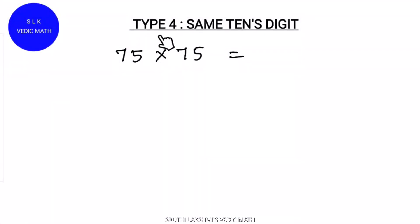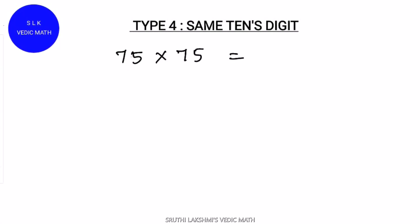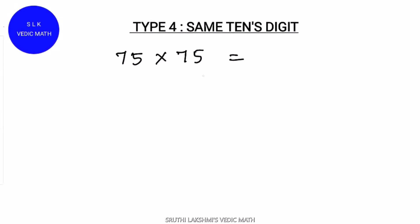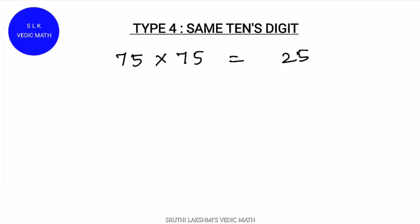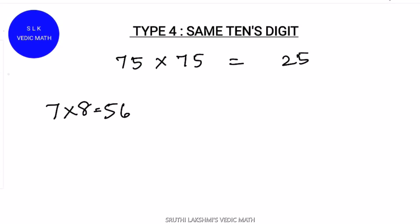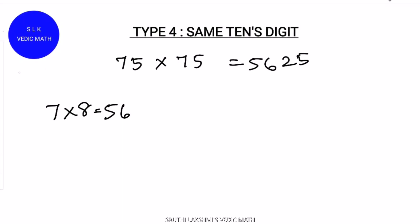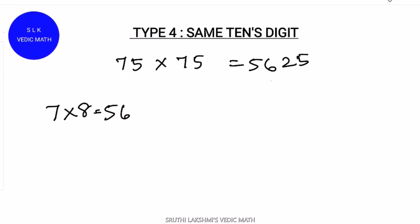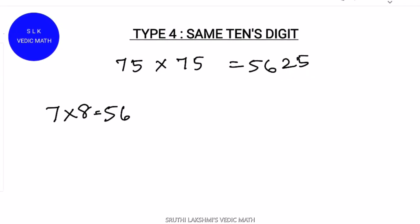Let's see Type 4: same 10's digit. So 75 into 75 — the same 10's digit is 7 and 7. Multiply 5 into 5 which is 25, so write 25. Next multiply the 10's digit by 1 more than it: 7 into 8 is 56. Write 56 here. So 75 into 75 is 5625. Isn't this method so easy?